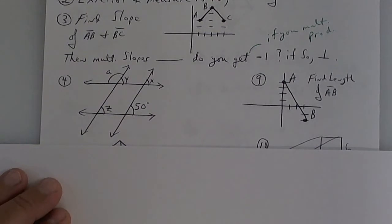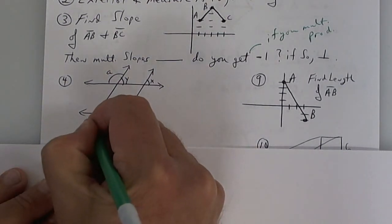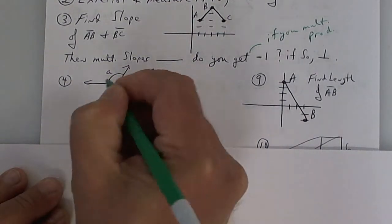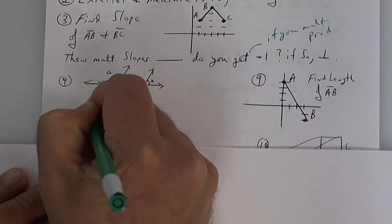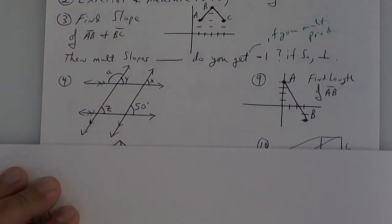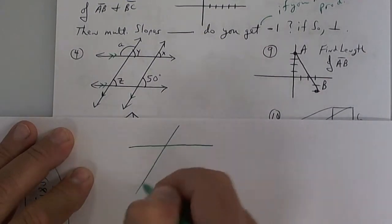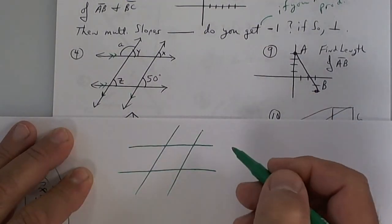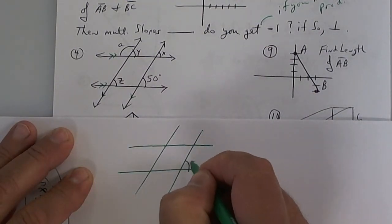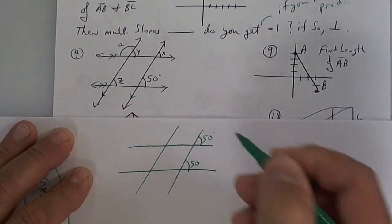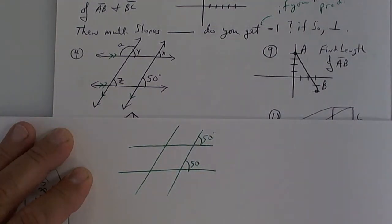Number 4, this one right here, I should have indicated that they're parallel. So put some lines on here. Because if they're not parallel, we can't find anything. So on your diagram, put parallel. Alright, now look up here. If this one right here, if they're all parallel and this one is 50, corresponding angle says this one's 50, top top.